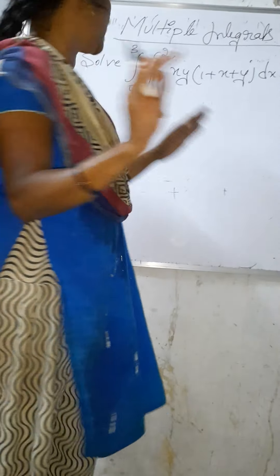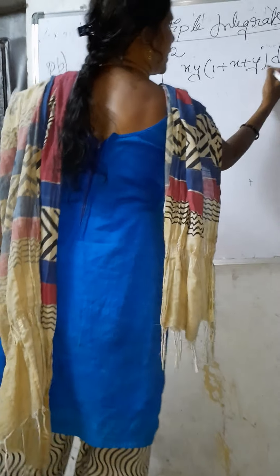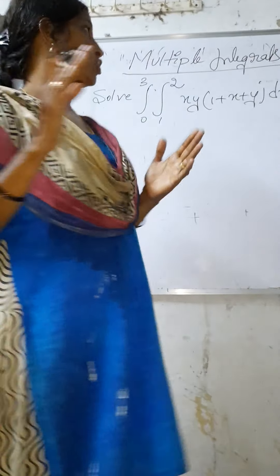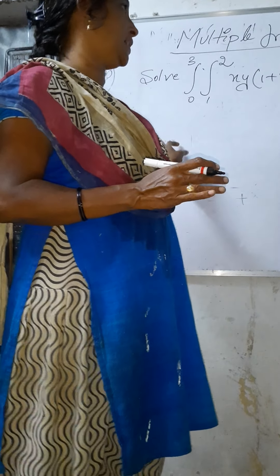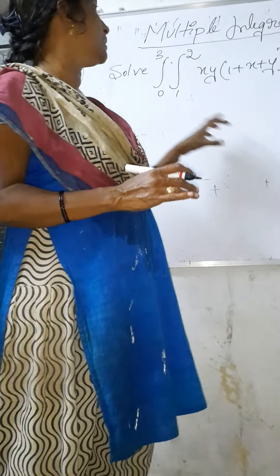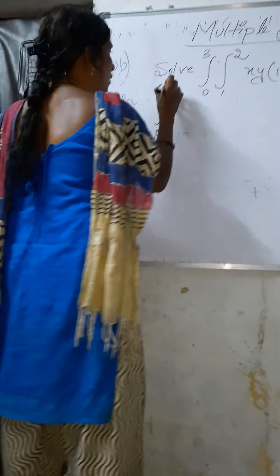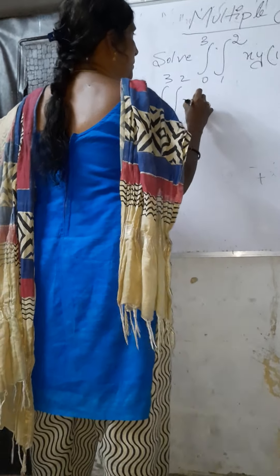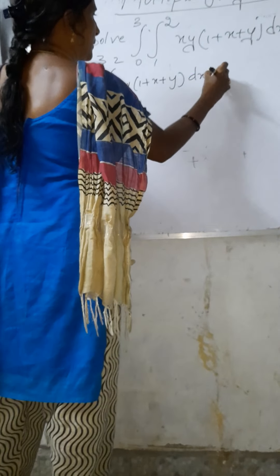Today we are going to solve the example problem: the integral from 0 to 3, integral from 1 to 2 of x·y·(1 + x + y) dx dy. Once again I can write the given problem in these multiple integrals. So once again I can write this problem as the integral of 0 to 3, integral of 1 to 2 of x·y·(1 + x + y) dx dy.